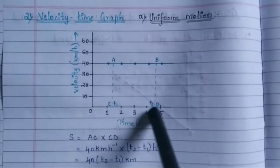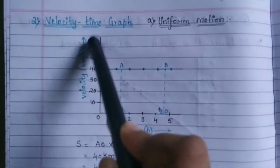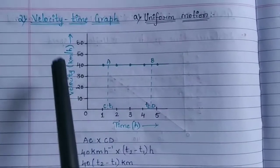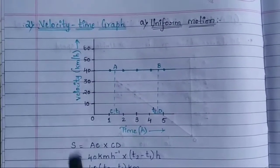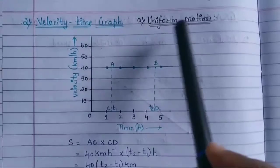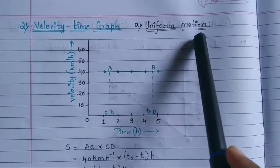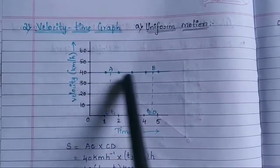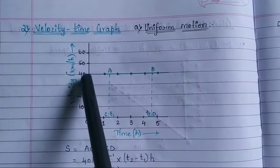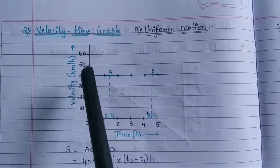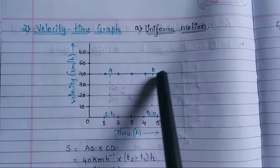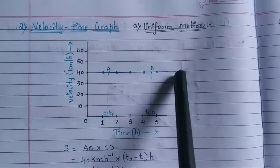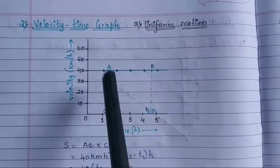For uniform motion, time is taken along the x-axis and velocity is taken along the y-axis — time in hours and velocity in kilometers per hour. When there is uniform motion of any vehicle, it moves at a fixed speed. For example, if a vehicle is moving at 40 kilometers per hour, the straight line shows its motion in a uniform manner.